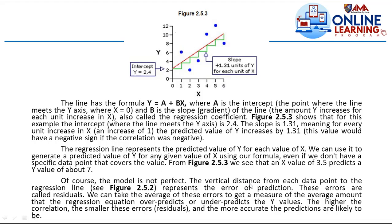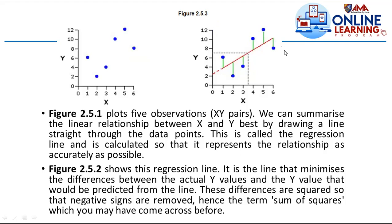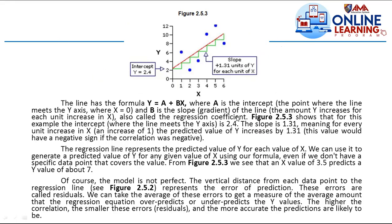Of course, the model is not perfect. The vertical distance from each data point to the regression line represents the error of prediction. These errors are called residuals. We can take the average of these errors to get a measure of the average amount that the regression equation overpredicts or underpredicts the y values. The higher the correlation, the smaller these residuals, and the more accurate the predictions are likely to be.